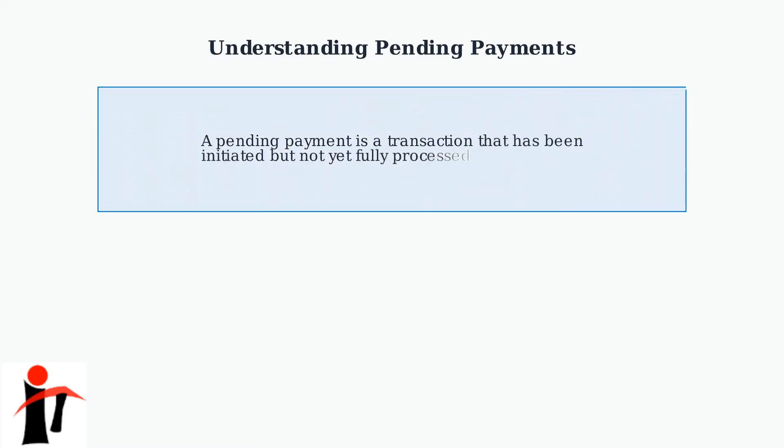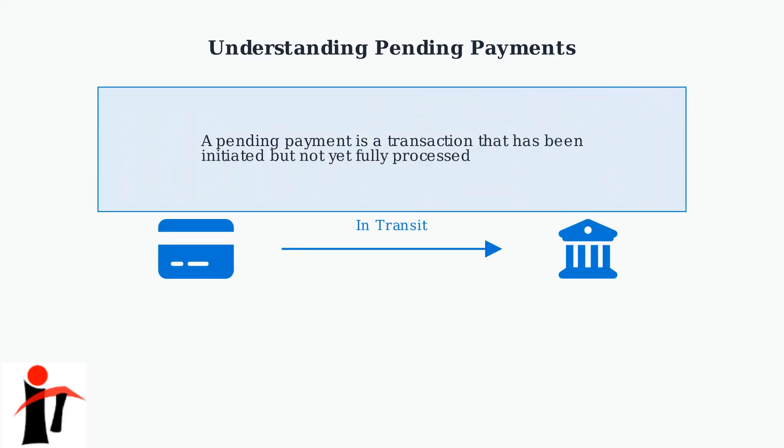A pending payment on Chase is a transaction that has been initiated but not yet fully processed. Understanding what pending payments are and how to identify them is crucial for managing your finances effectively. Think of a pending payment like a package in transit — it has left your account but hasn't yet reached its final destination.